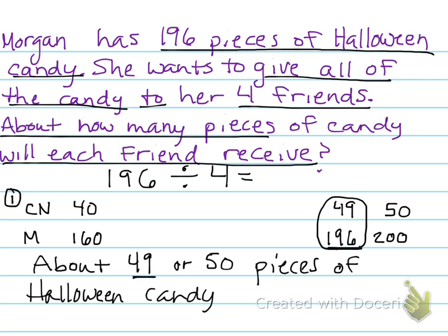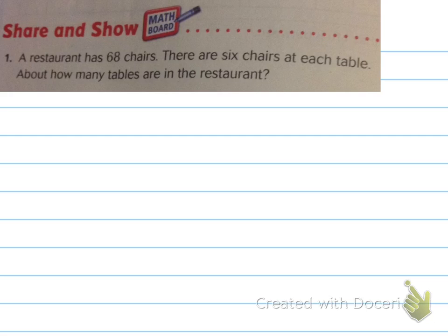A restaurant has 68 chairs. There are six chairs at each table. About how many tables are in the restaurant. So, again, you don't need to write down everything. 68 chairs. Six chairs at each table. About how many tables. So, again, they want us to divide the 68 total chairs by six chairs at each table to find out how many tables there are. Well, again, step one, list your counting numbers and multiples of your divisor.